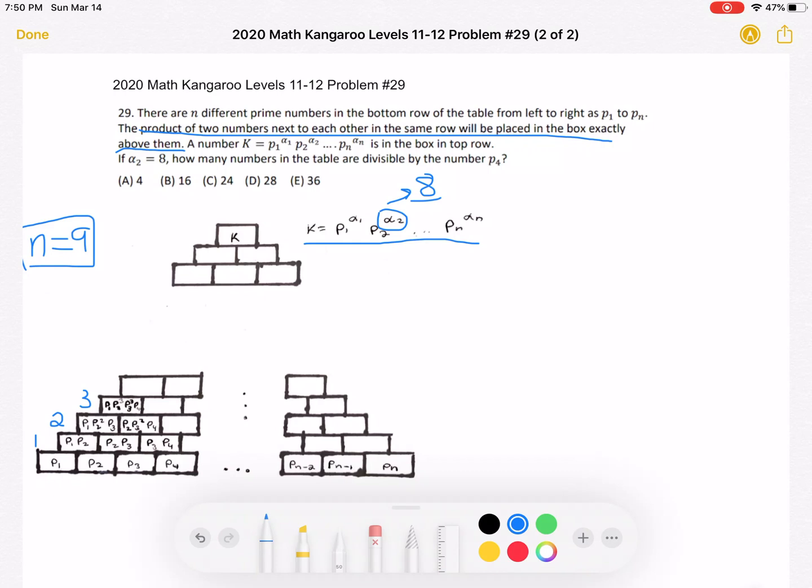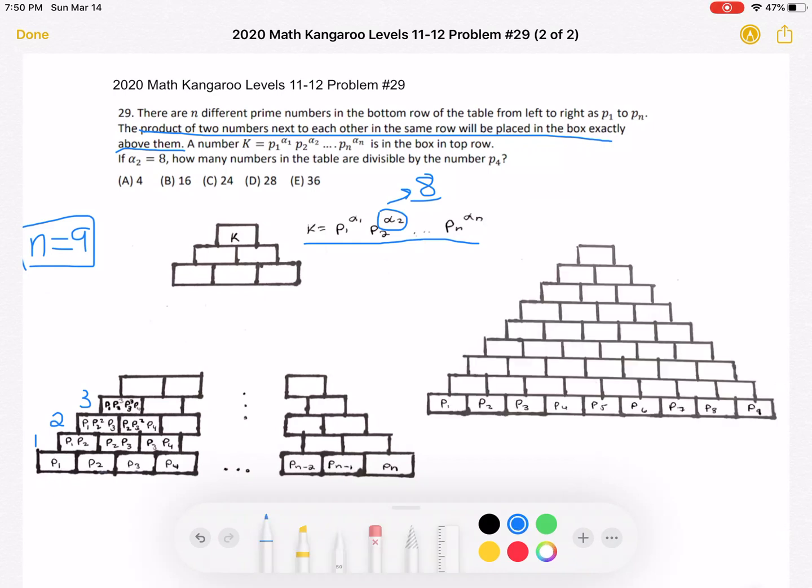Now, let's move on to another diagram that I've drawn here in order to find what we're looking for, which is the number of numbers in the table that are divisible by P4. So, now we know that n is 9. So, our bottom row given to us in the problem, we have P1, P2, P3, all the way to P9.